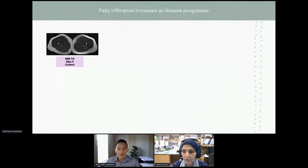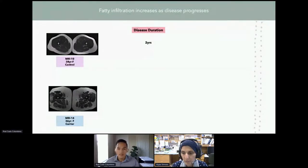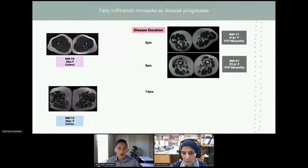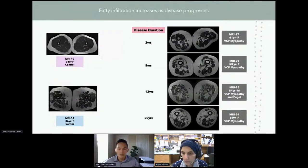By visual observation of the MRI images, we can see that as VCP myopathy progresses, the fat infiltration within the thigh muscles bilaterally increases as well. We have a control and a carrier for comparison. For the control, we should not see any increased intensity within the muscle. The disease duration MRI images range from two years all the way to 20 years, and most muscles are being replaced with fat as depicted by increased intensity.